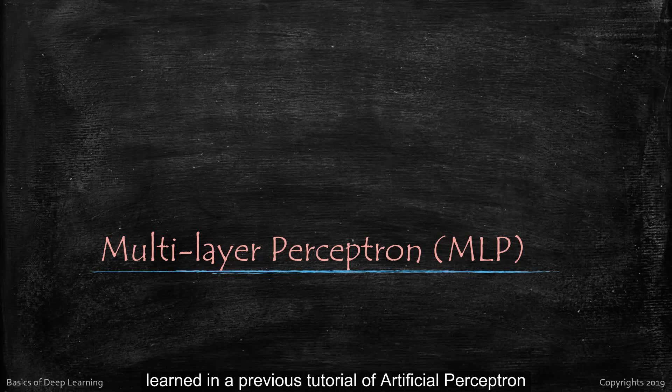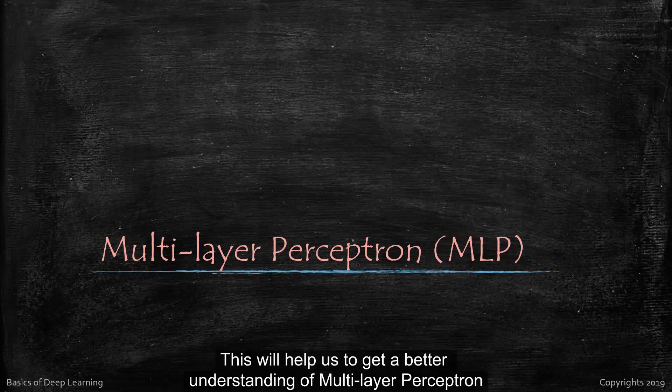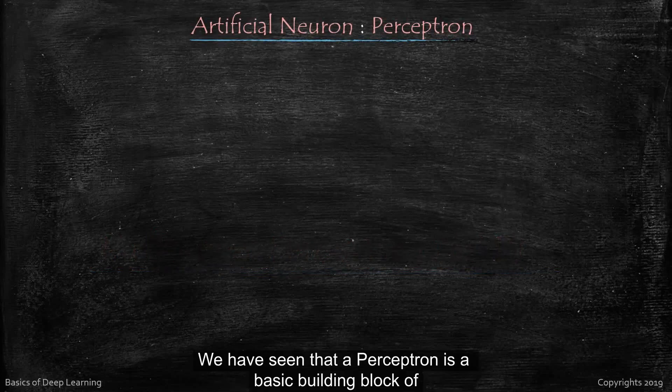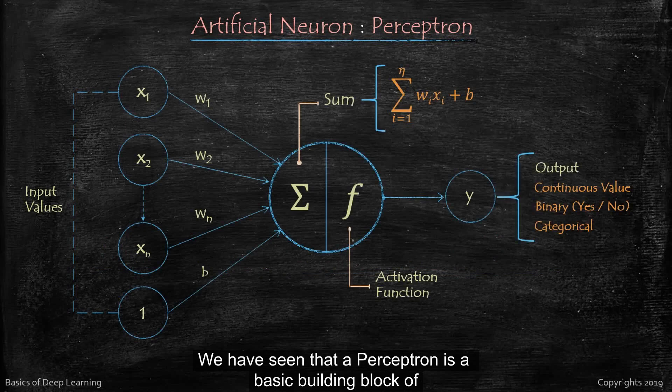On what we have learned in our previous tutorial of artificial perceptron. This will help us to get a better understanding of multilayer perceptron and relevant concepts. So let's get started. We have seen that a perceptron is a basic building block of neural network.